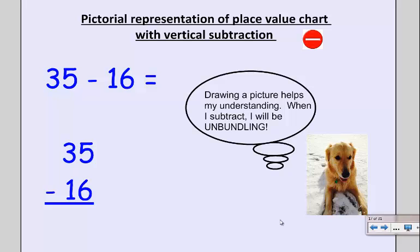Scoop always thinks that drawing a picture really helps her understanding. When we did addition on a place value chart, we would bundle 10 ones and trade them in for a 10. Well, since subtraction is the opposite of addition, we are going to unbundle. Meaning if we have one 10, we can trade it in for 10 ones. So let's take a look at what this looks like.